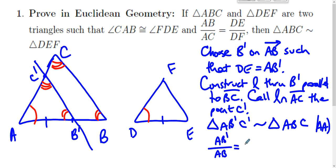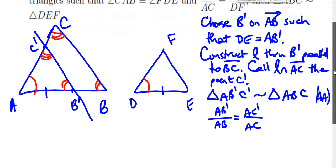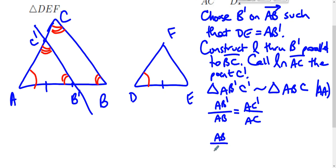Which means with a little bit of algebra, AB is to AC as AB prime is to AC prime. But we were given that AB over AC is DE over DF.